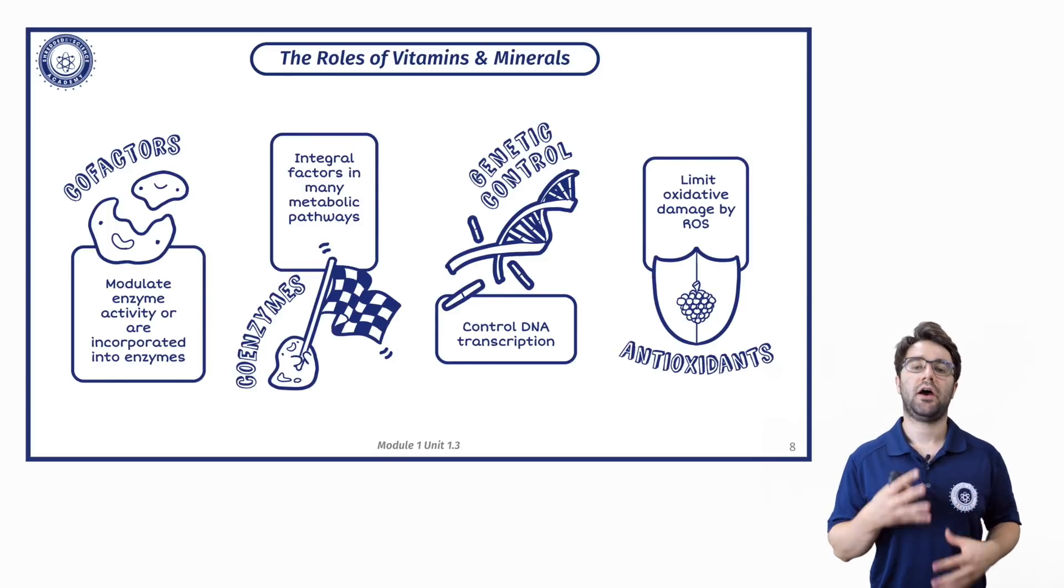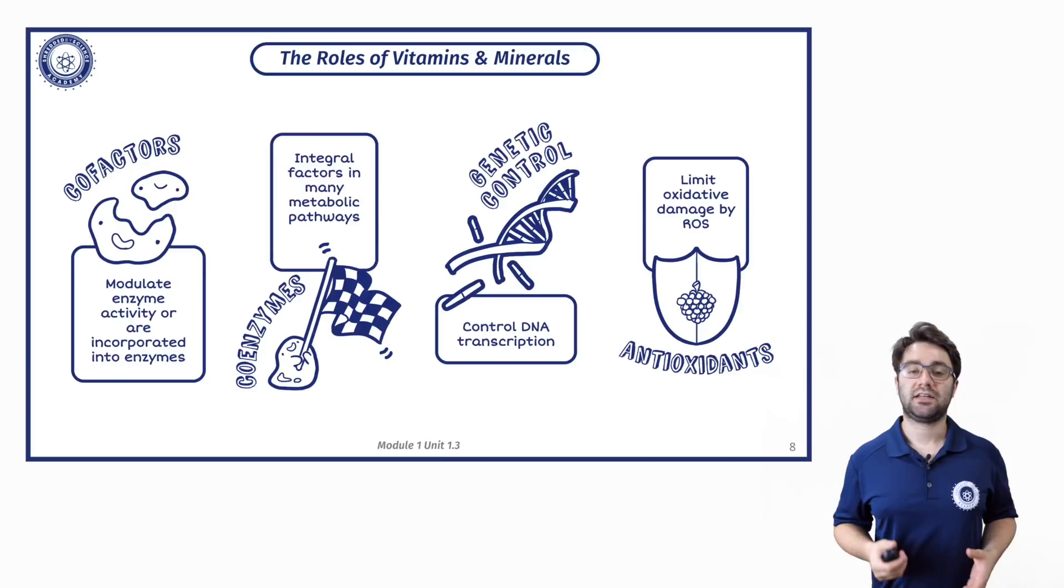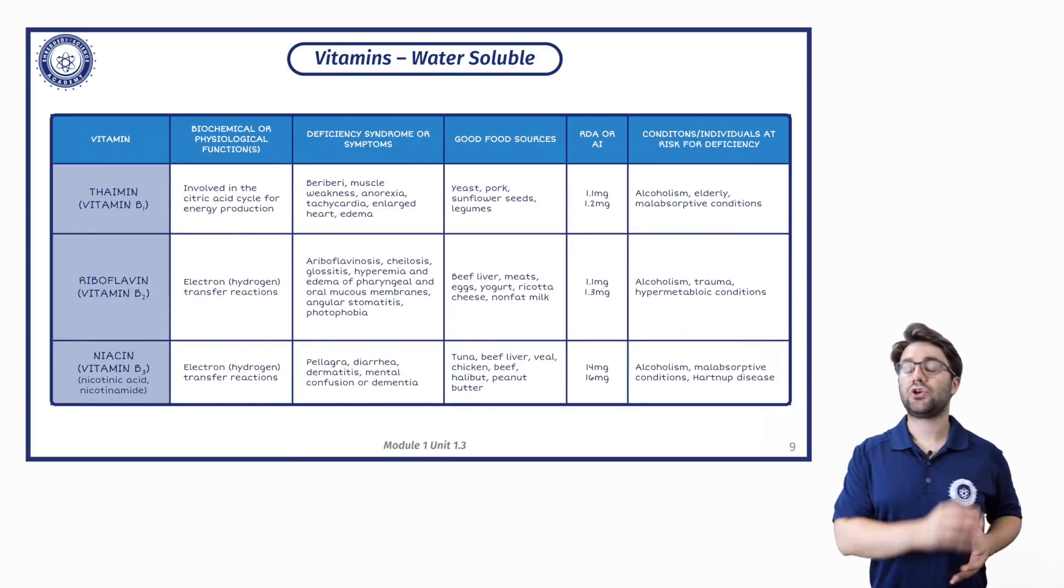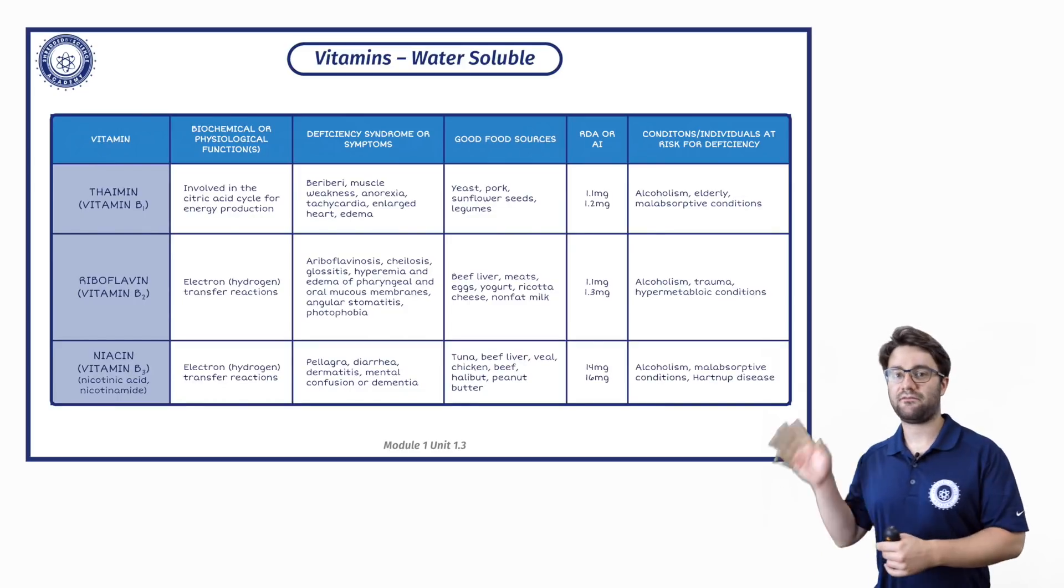Vitamin E, for example, being a key example of a vitamin functioning as an antioxidant. There are two main categories of vitamins: water-soluble and fat-soluble vitamins.